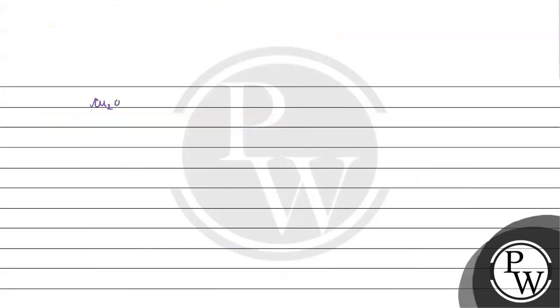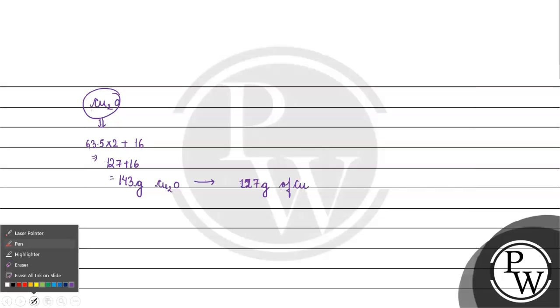Cu2O - the molar mass is copper atomic mass 63.5 into 2 plus 16. How much is this? We have approximately 127 plus 16, which is 143 gram. So 143 gram of Cu2O contains 127 gram of copper.